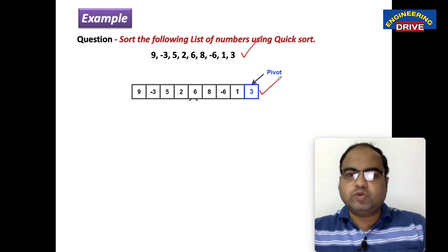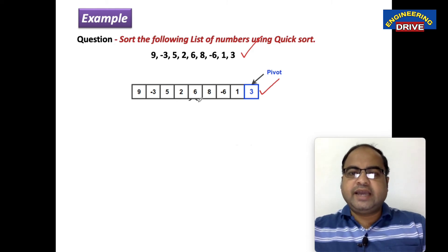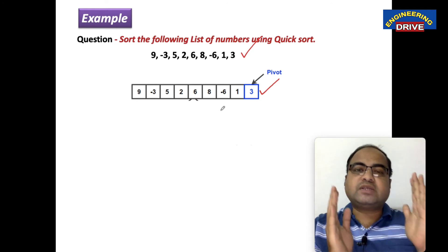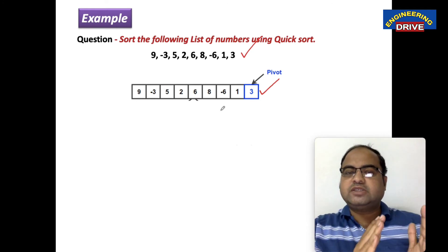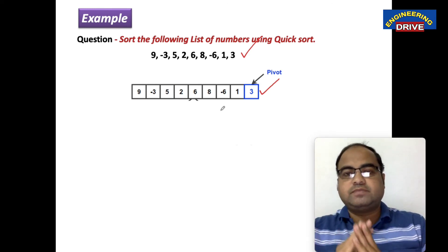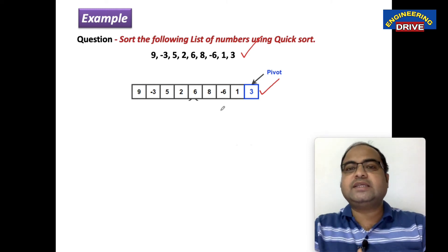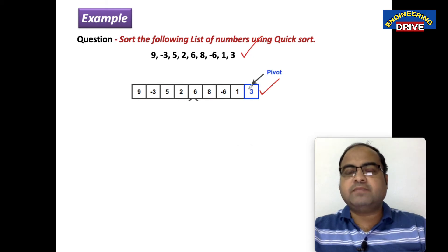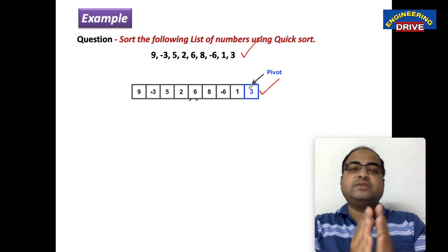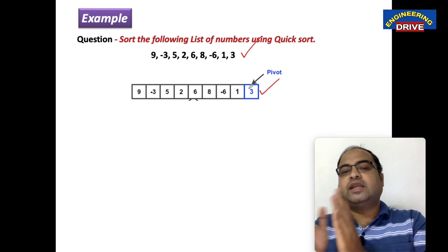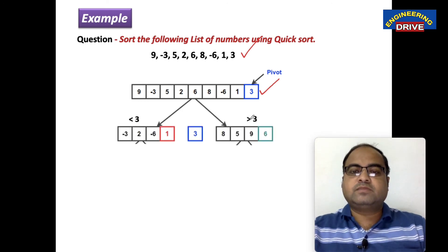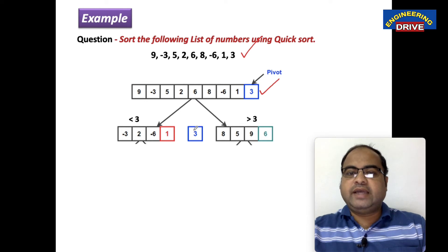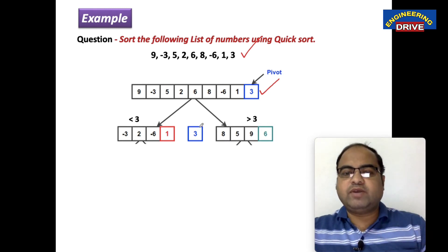Next step: this entire array is in unsorted order, and I need to form two subarrays. First subarray: elements less than the pivot — in the left subarray we get elements less than the pivot, and in the right subarray we get elements greater than the pivot. The pivot here is 3. So the first subarray contains: -3, 2, -6, 1. The pivot is 3. Greater than 3 we get: 8, 5, 9, 6. Two subarrays created and one pivot element.